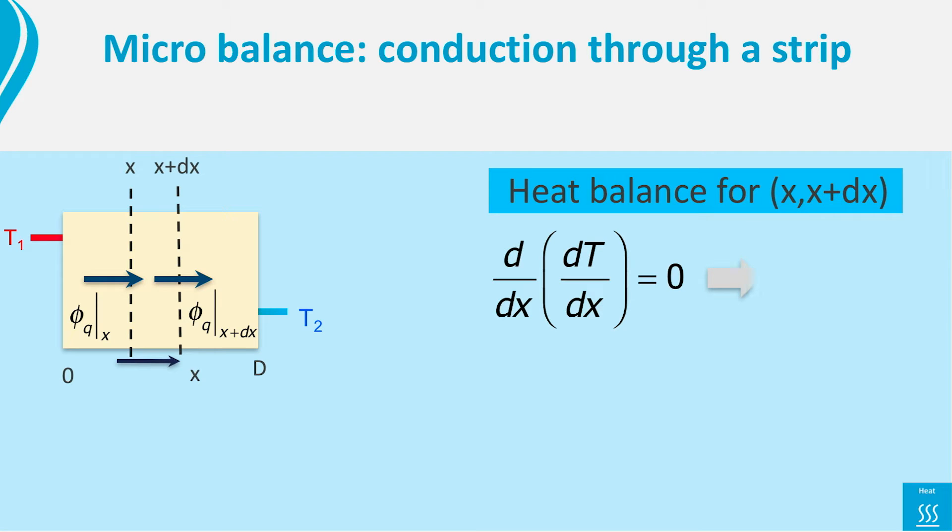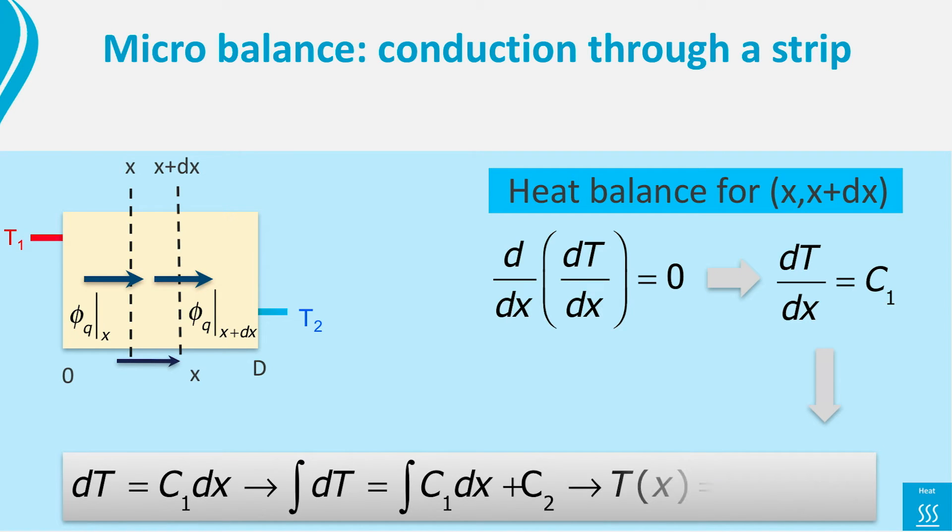Thus we get dT/dx is c1, with c1 some yet unknown constant. But if dT/dx is a constant, then T is linearly depending on x. We can find this by multiplying left and right of our equation by dx and get dT equals c1 times dx.